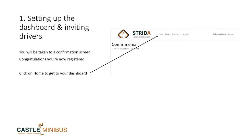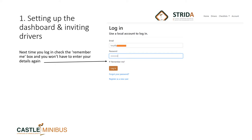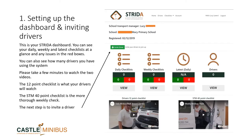When you click on that email to confirm your address, you will be taken to a page confirming your email, and you will need to click on the home page to return to the Strider dashboard. You may be asked to log back in to Strider; if so, please tick the remember me box so that you do not need to re-enter your password next time. Once registration is complete, you will have access to your dashboard, where you will be able to see all your checklists at a glance.